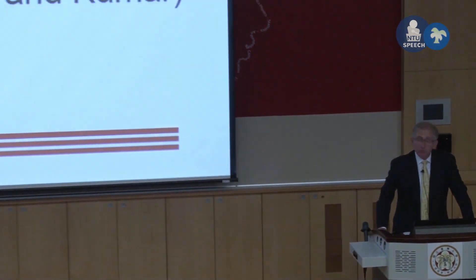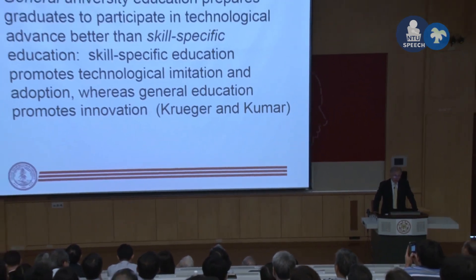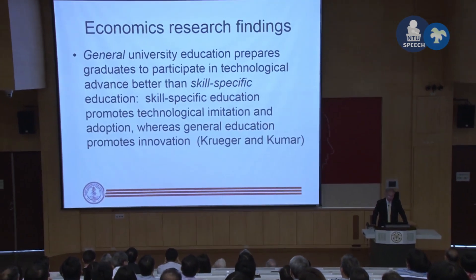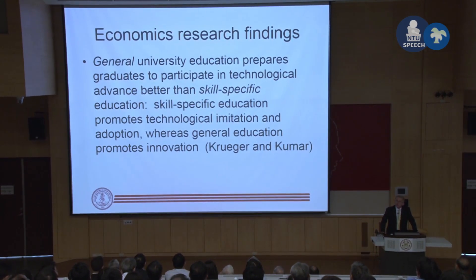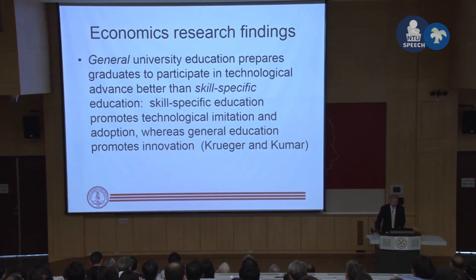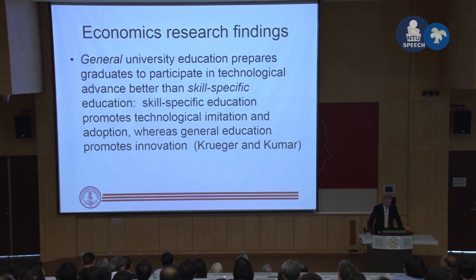Let me briefly describe some of the research findings from economists. The argument of Kruger and Kumar is that general university education prepares graduates to participate in technological advance better than skill-specific education. Skill-specific education promotes technological imitation and adoption, whereas general education promotes innovation. To quote from their conclusion: 'General education is more costly to obtain but enables workers to operate new technologies incorporated into production. An economy whose policies favor vocational education will grow slower in equilibrium than one that favors general education.'